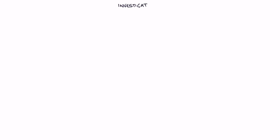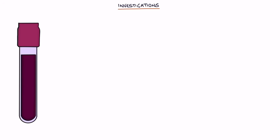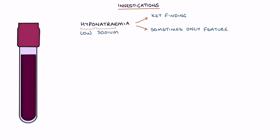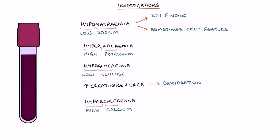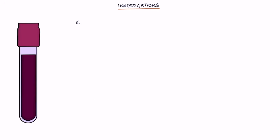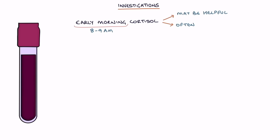Next let's talk about investigations. On a blood test, hyponatremia or a low sodium is the key biochemical finding — this is sometimes the only presenting feature. Other potential blood test findings include hyperkalemia or a high potassium, hypoglycemia or a low glucose, raised creatinine and urea due to dehydration, and hypercalcemia or a high calcium. The early morning cortisol level, taken between 8 and 9am, may be helpful but is often falsely normal.